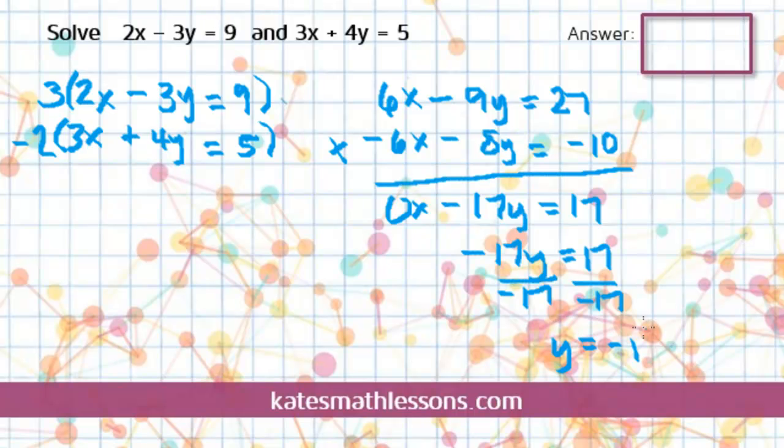Now the common mistake is for students to get one of the answers and just to put down that as the final answer. But what you have to remember when you're solving a system is that your answer is going to be an ordered pair. And we've just found the y coordinate. And the y coordinate always goes second. So we've found half of our answer. Now we need to go back and find the x.